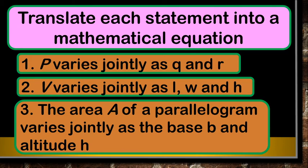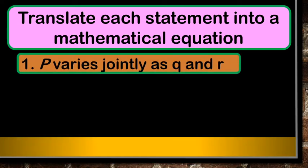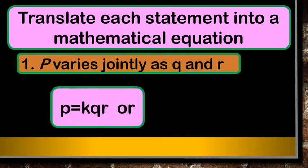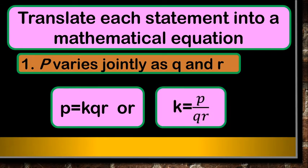Now translate each statement into a mathematical equation. Number one: T varies jointly as Q and R. Write T before the equal sign, then jointly multiply Q and R into k, the constant of variation. It is written as T equals k times Q times R. To find the constant of variation, just cross-multiply Q and R to the other side.